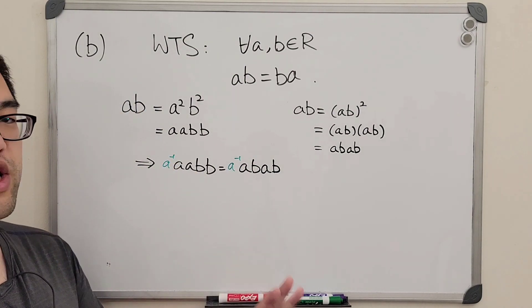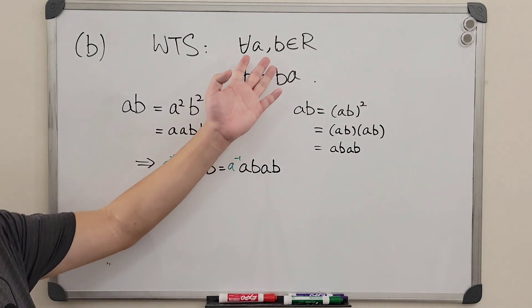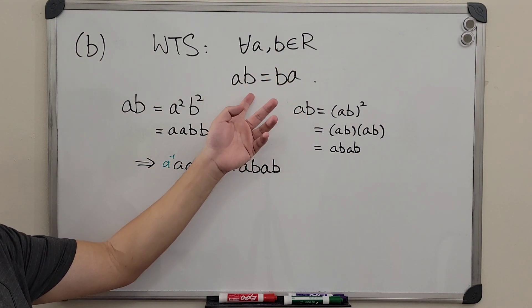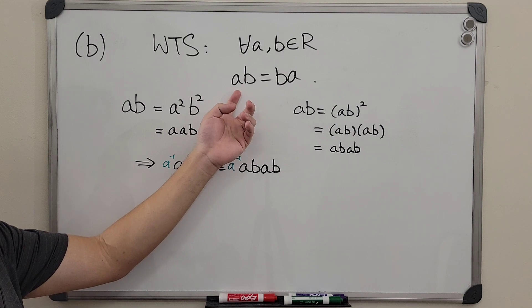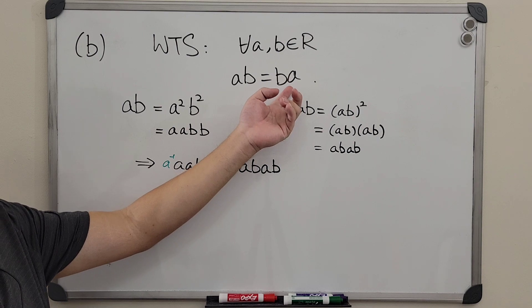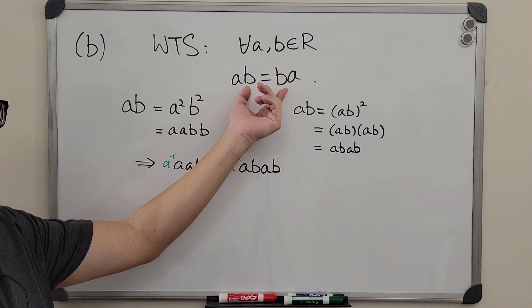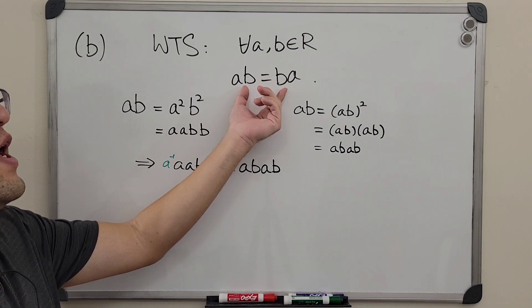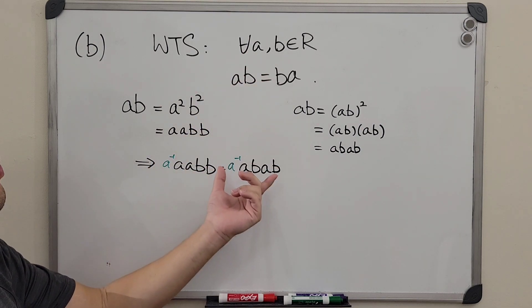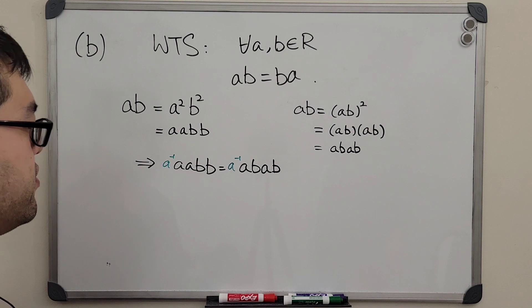a and b are not equal to zero. Otherwise we can just assume that if a or b is equal to zero, of course it multiplied with any other elements will get zero, and then any elements multiplied by zero is still equal to zero. So this will also hold true if a or b, one of them, is equal to zero.